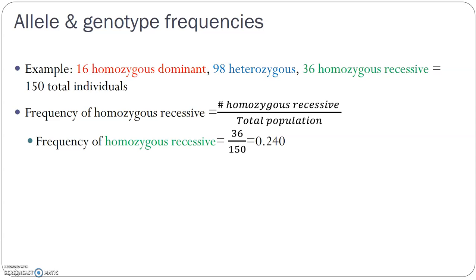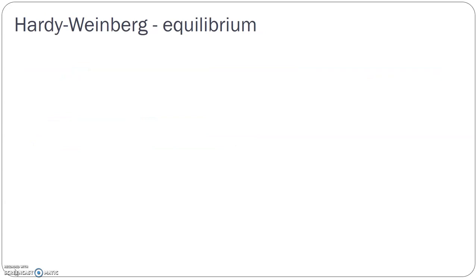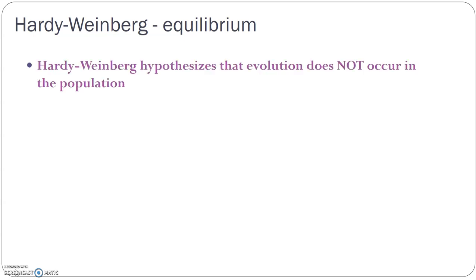Now the next thing to discuss is what's called the Hardy-Weinberg equilibrium. This equilibrium basically states the hypothesis that evolution did not happen in a certain population. We're going to test this by doing experiments where we mess with some of the assumptions of the Hardy-Weinberg equilibrium. Check out the other videos in this playlist for more help with the math.